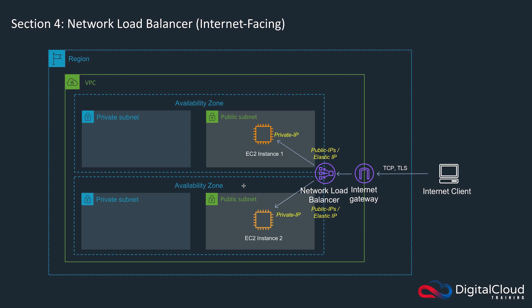In this lab we're going to cover network load balancers. Network load balancers are also new generation and similar in many ways to application load balancers. Some of the key differences are firstly the protocols that are supported. You can see here you've only got TCP and TLS, these are the layer 4 session layers of the OSI model. An application load balancer operates at layer 7 only, which is HTTP and HTTPS.